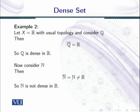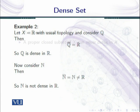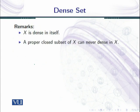Now consider the set of natural numbers. The closure of the natural numbers is again the natural numbers. This means the set of natural numbers does not fulfill the property of denseness, so the set of natural numbers is not dense in R.